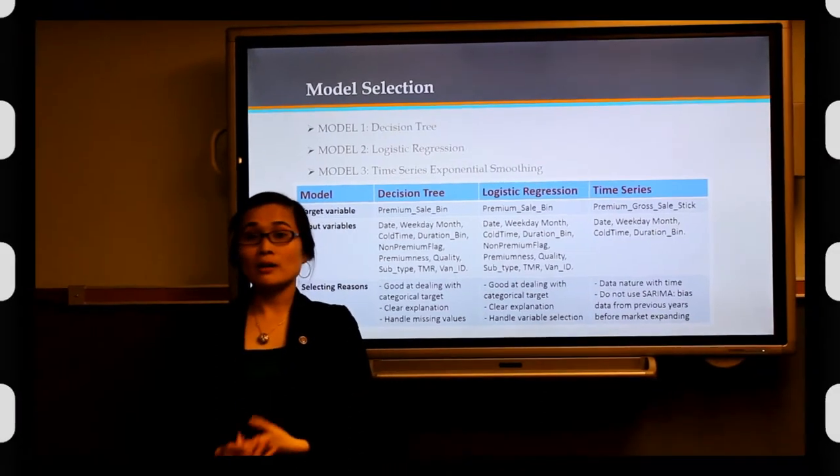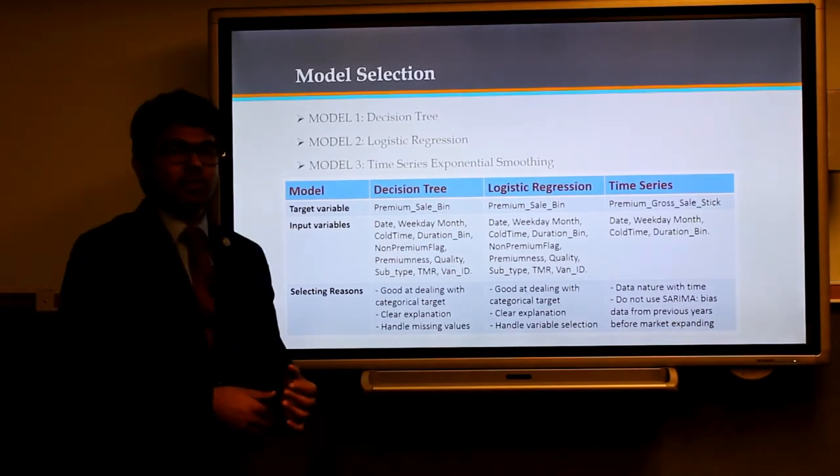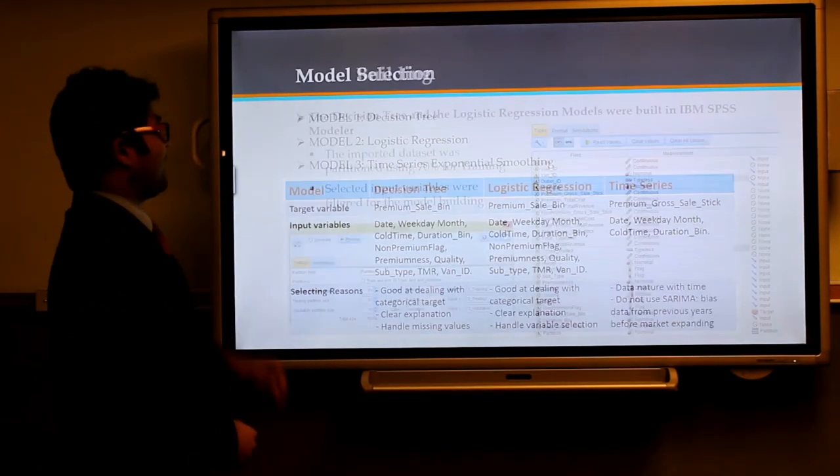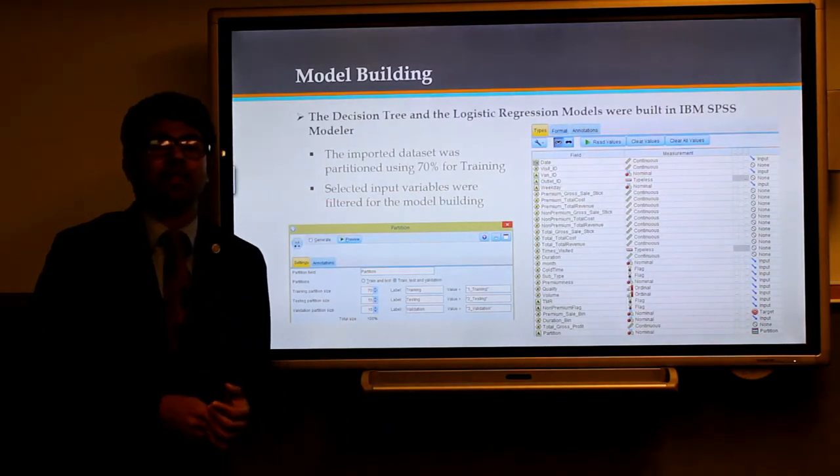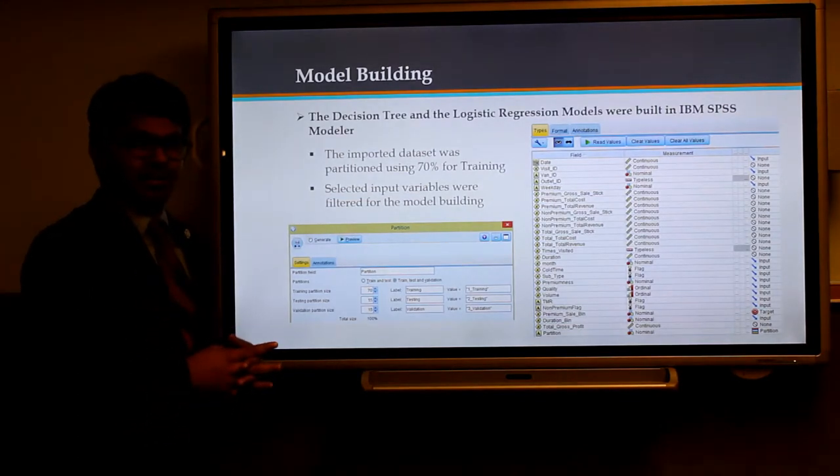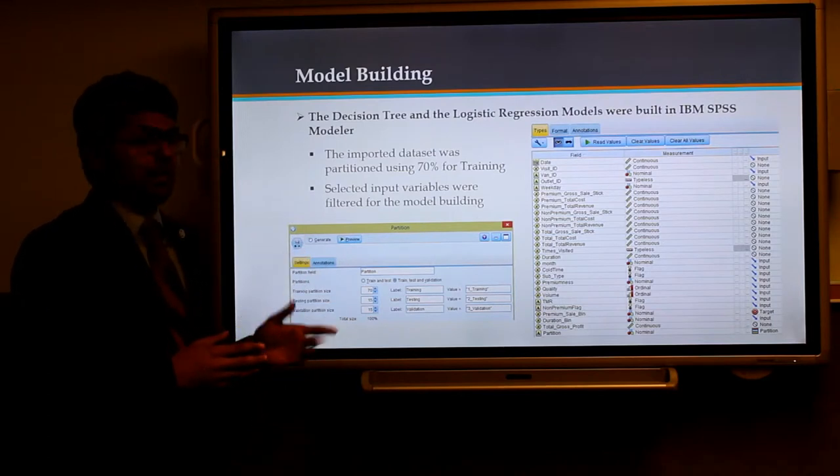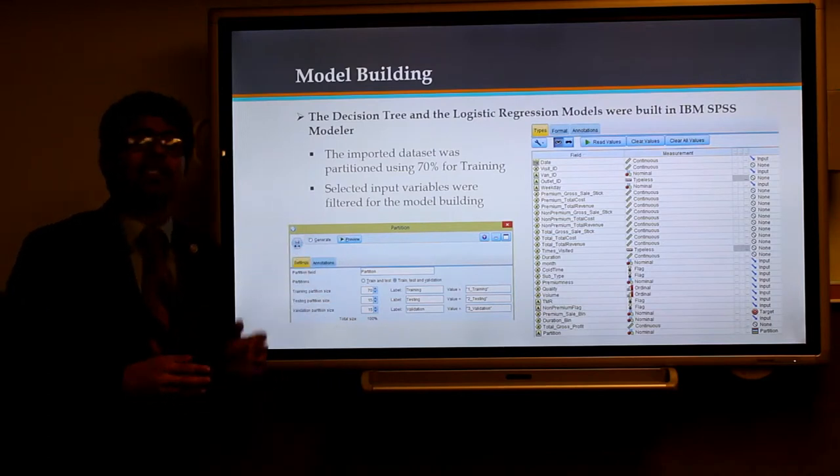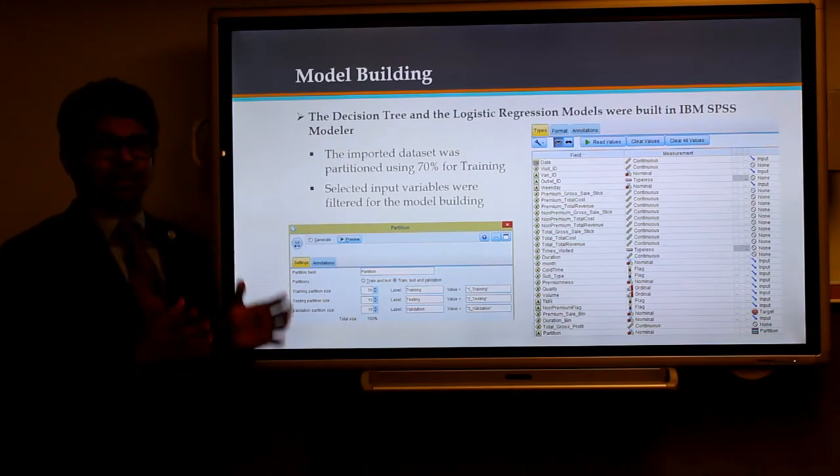Now Kiran will talk about model building. The decision tree and logistic regression were built using IBM SPSS Modeler. Initially, it was connected to the data partitioning node in which 70% of the data was used for training. This was because we had around 700,000 records and we need to train the model well enough so that it understands the model well.